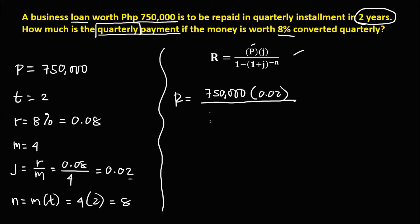So then over 1, minus 1, plus J, J is 0.02, then to the power negative N, and N is equal to 8.